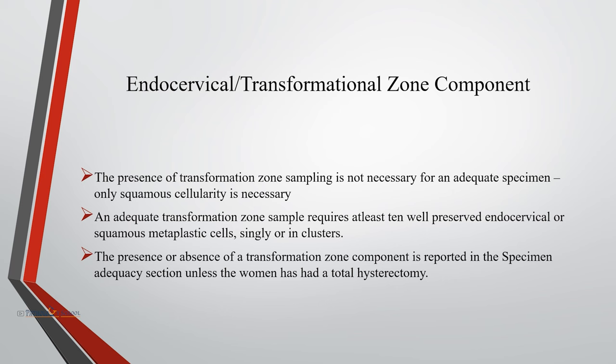An adequate transformation zone sample requires at least 10 well-preserved endocervical or squamous metaplastic cells, singly or in clusters. The presence or absence of a transformation zone component is reported in the specimen adequacy section, unless the woman has had a total hysterectomy.